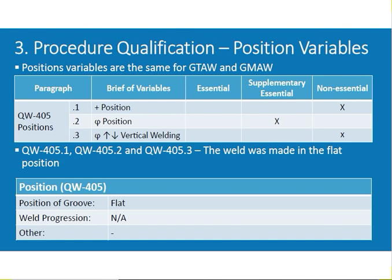QW-405 is position variables: QW-405.1 is position, QW-405.2 is also position (supplementary essential), and QW-405.3 is vertical welding — non-essential. If there is any change in QW-405.1, QW-405.2, or QW-405.3, the weld position group is flat, weld progression is not applicable.